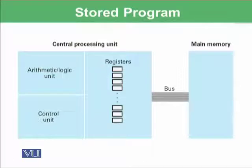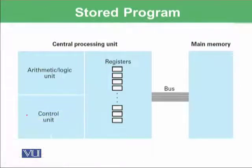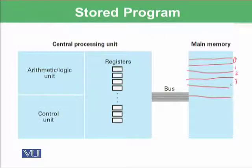So let's say we have a CPU, as we learned in the previous lecture. What we will do is store the program here in main memory. Main memory has addresses — for example, 0, 1, 2, 3, 4, 5. Our previous algorithm for adding two numbers has five steps.